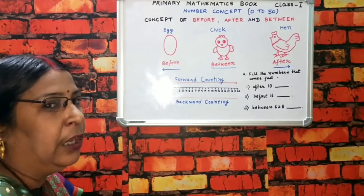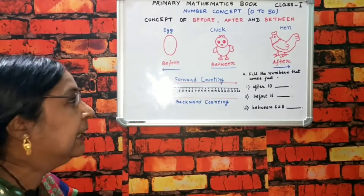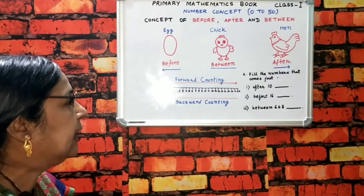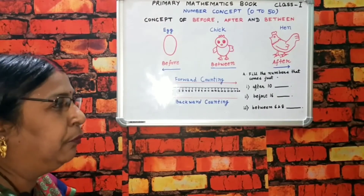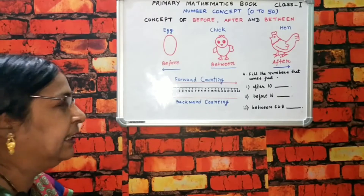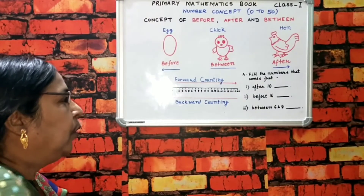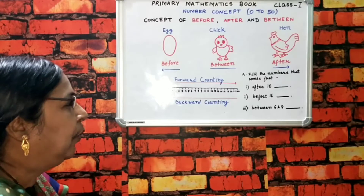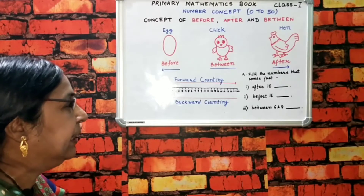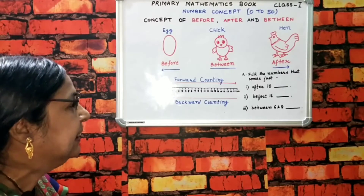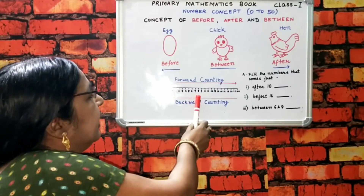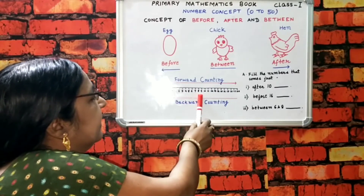And we go forward counting. What comes after? Forward counting. 10 — 10 kab aata hai? Forward counting. Hum log jab dekhte hain, 9 ke baad 10 aata hai. So what comes after 9? 10.